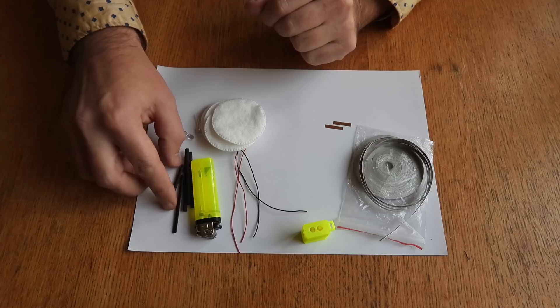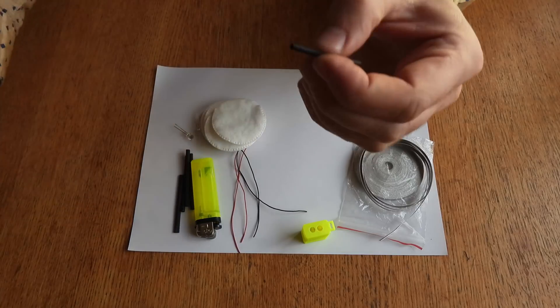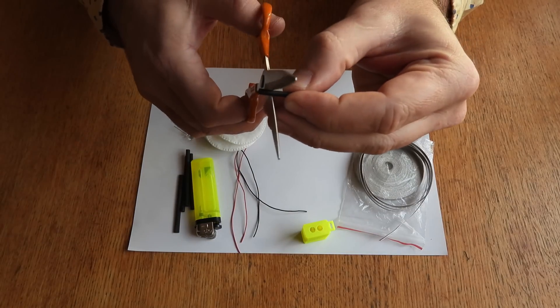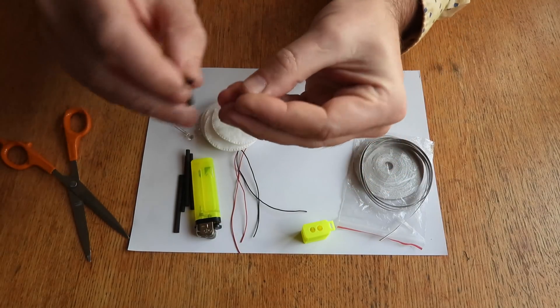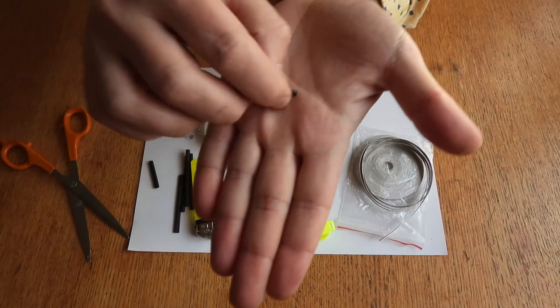First what I do, I take shrinking tube, cut about 5 or 6mm long, this piece.